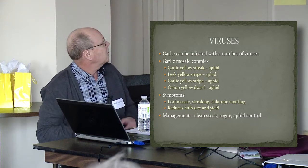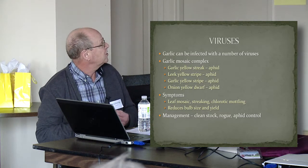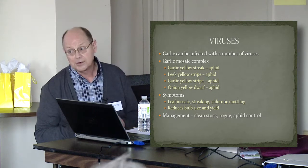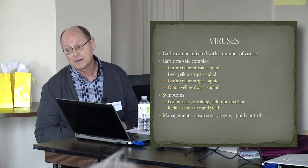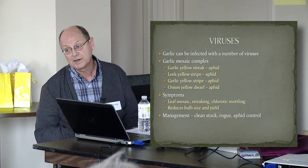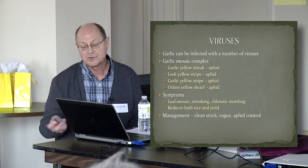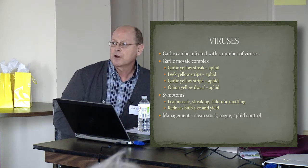The main complex is one called garlic mosaic complex. They're all spread by aphids, but also they're all spread by infected planting stock. So you can buy your viruses with your planting stock, just as you can buy white rot.